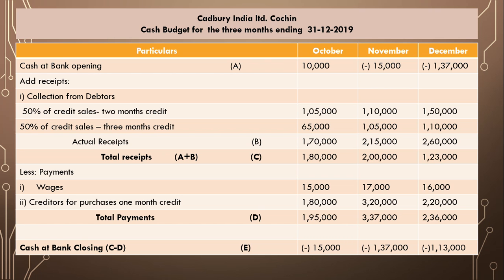To find the closing balance, we add opening balance to actual receipts. For October: opening balance 10,000 plus actual receipts 1,70,000 equals total receipts of 1,80,000.